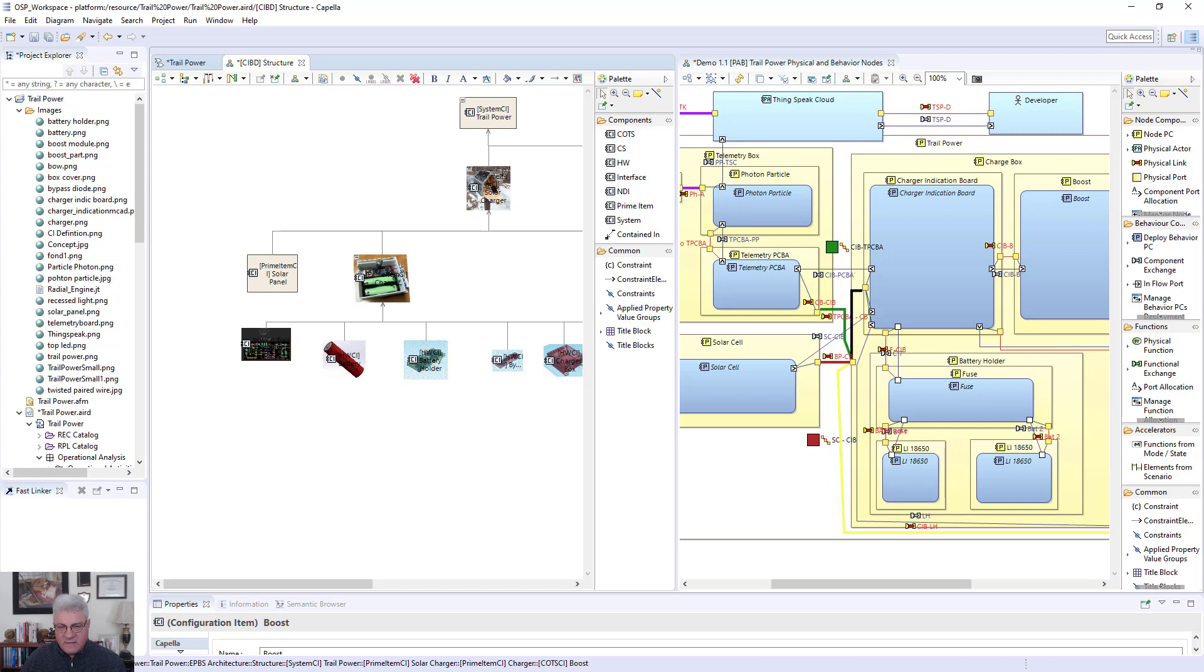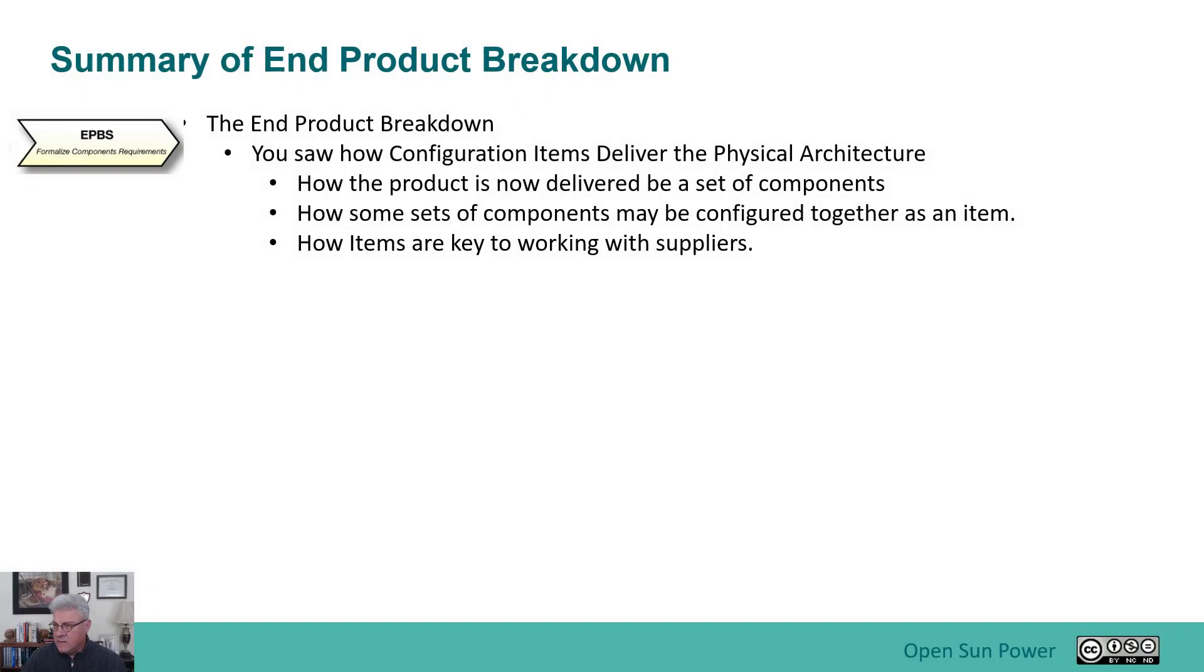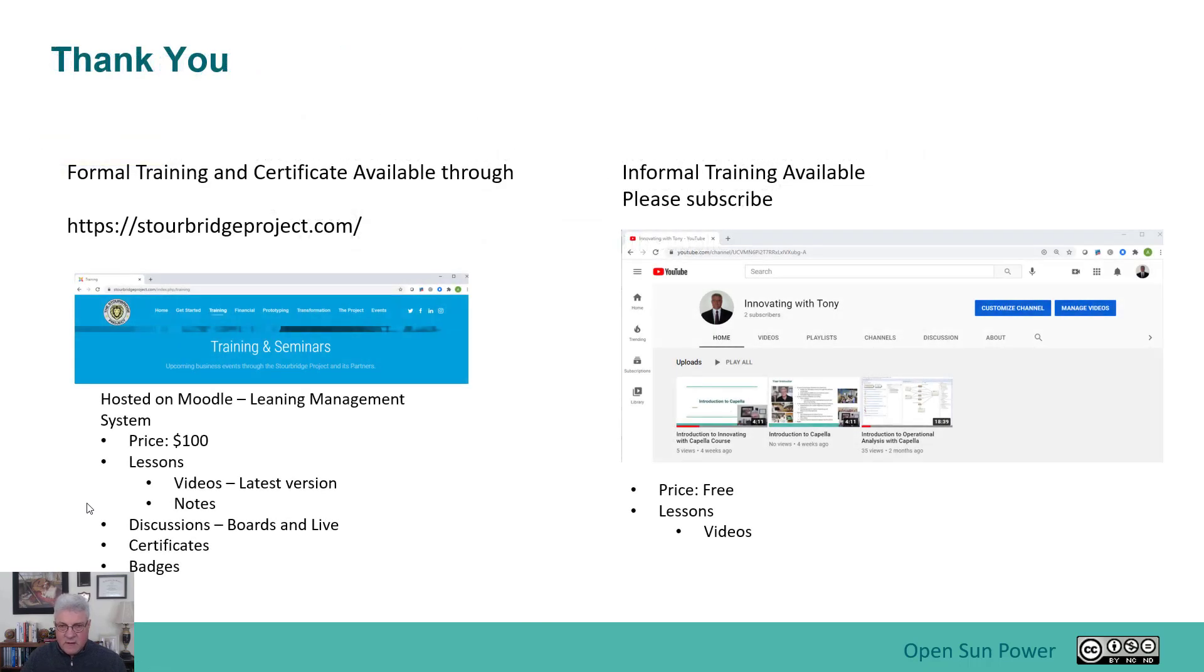That basically concludes that section. In summary, with the End Product Breakdown you saw how you basically have these configured items and how you can break down and deliver the physical architecture with them. This shows how the product is now delivered by a set of components, how some sets of components can be configured together as an item, and finally how items are the key to working with suppliers and basically building up content for your system. Thank you very much.